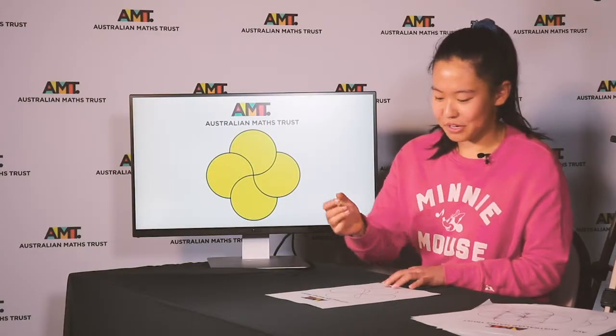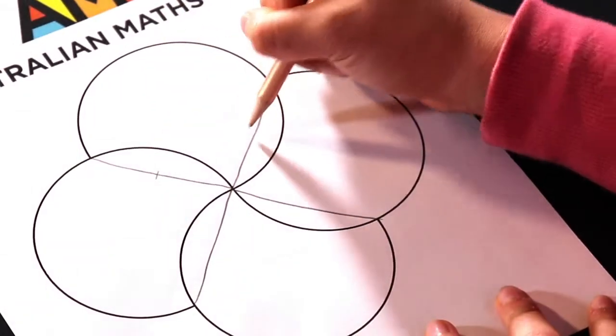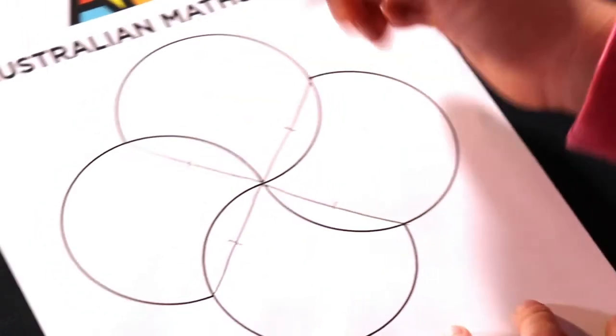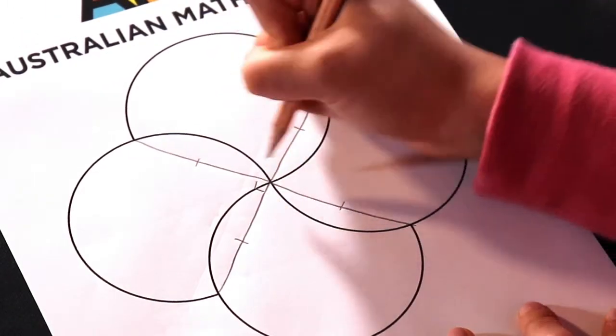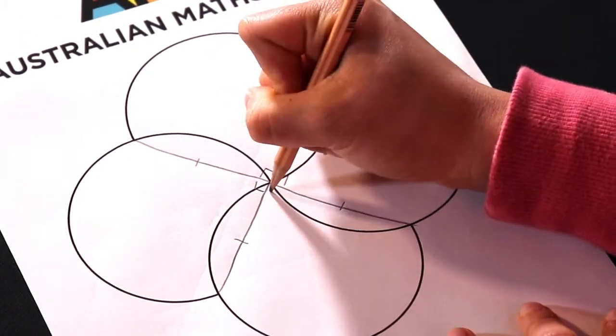Because you have rotational symmetry, these lines are all equal and the angles at the center are also all equal, so they're all 90 degrees.